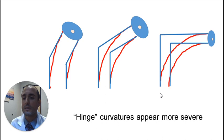Another observation is that subjectively, hinge type curvatures may appear more severe than the arc type of curvatures. Here are the 30, 60, and 90 degrees comparisons in between the hinge and the arc type of curvatures.